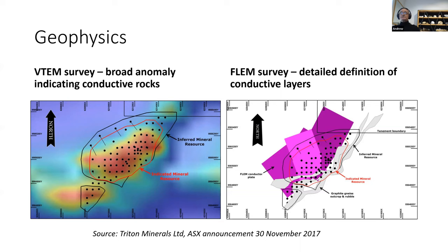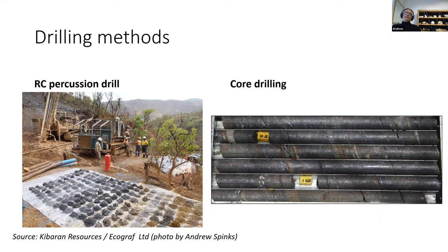For drilling methods, RC percussion is commonly used, especially in an early phase to see if there's any graphite present. Core drilling may be used in combination, or some people use almost exclusively one or the other. Of the two, core drilling is really the only one of any use for metallurgical testing. It's highly recommended that core drilling is done, because percussion drilling smashes the rock up, reduces the graphite in size, and makes it very difficult to determine how easy it is to extract the graphite.